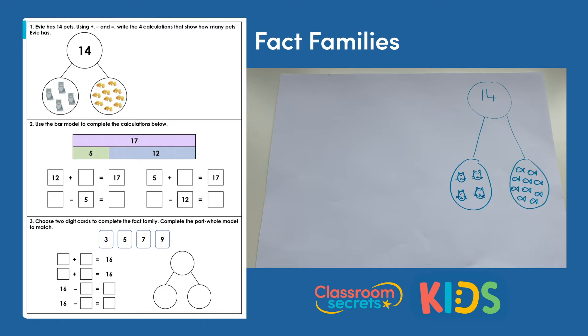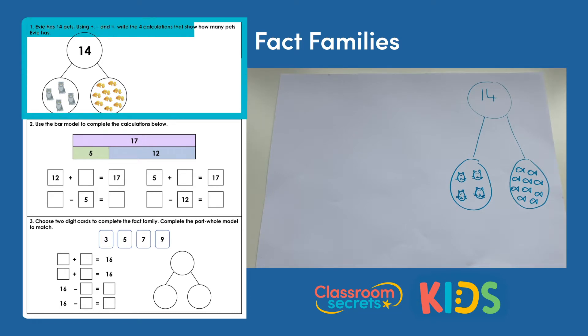In this video I will take you through the answers to the fact families worksheet. Question one: Evie has 14 pets. Using add, subtract and equals, write the four calculations that show how many pets Evie has.